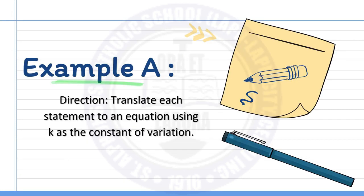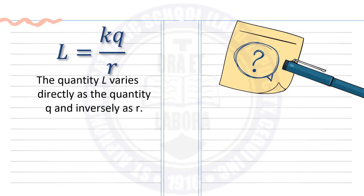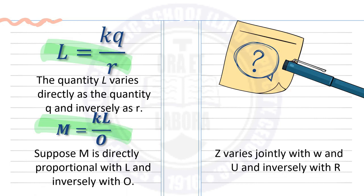We have three sets of examples for combined variation. Example A — translate each statement to an equation using k as the constant of variation. One: L varies directly as q and inversely as r gives L equals kq over r. Two: M is directly proportional with L and inversely with O gives M equals kL over O. Three: z varies jointly with w and u and inversely with r gives z equals kwu over r.